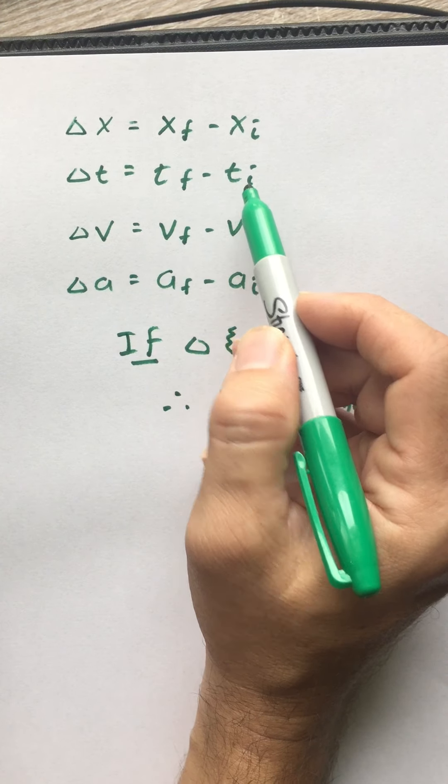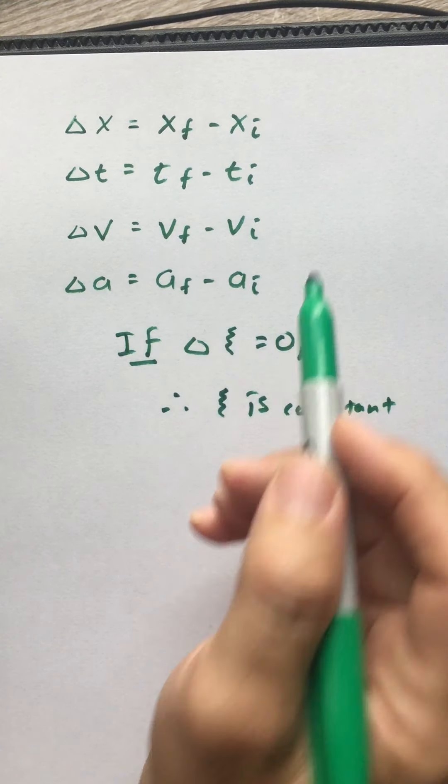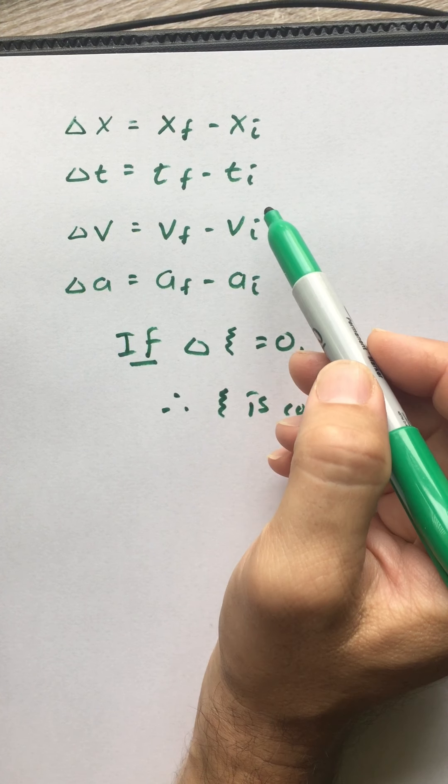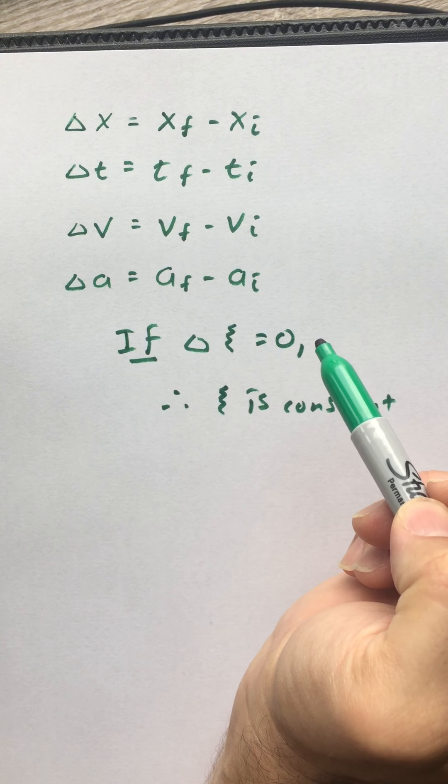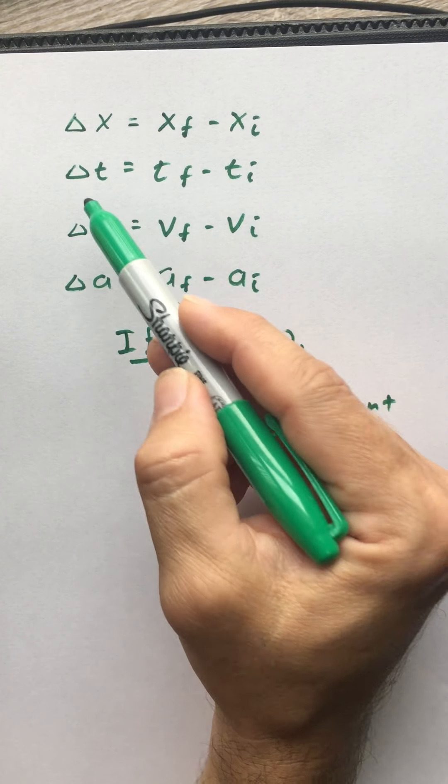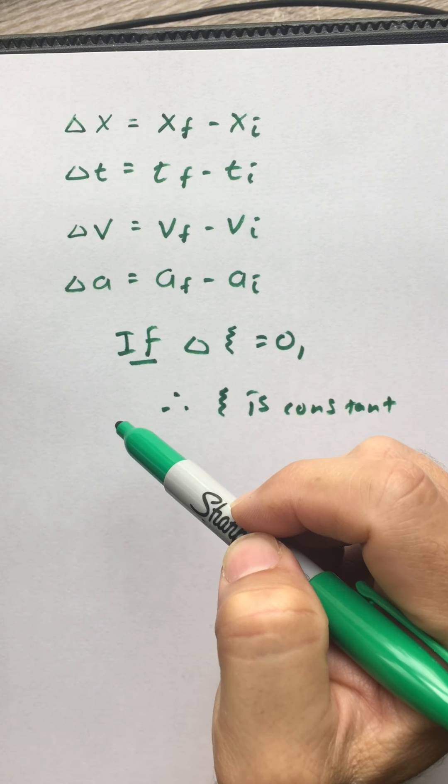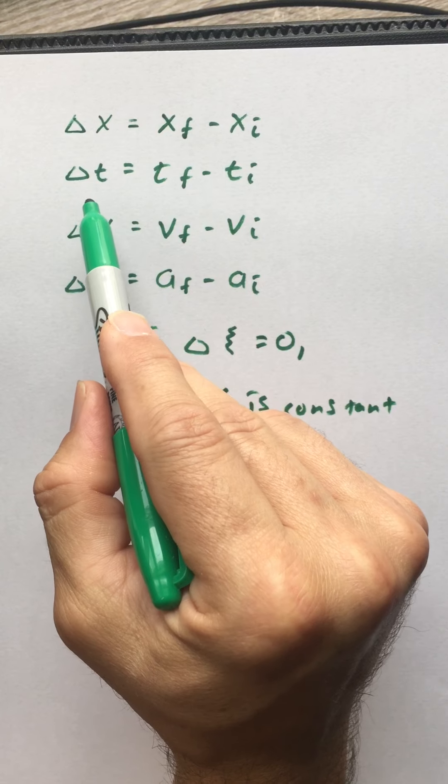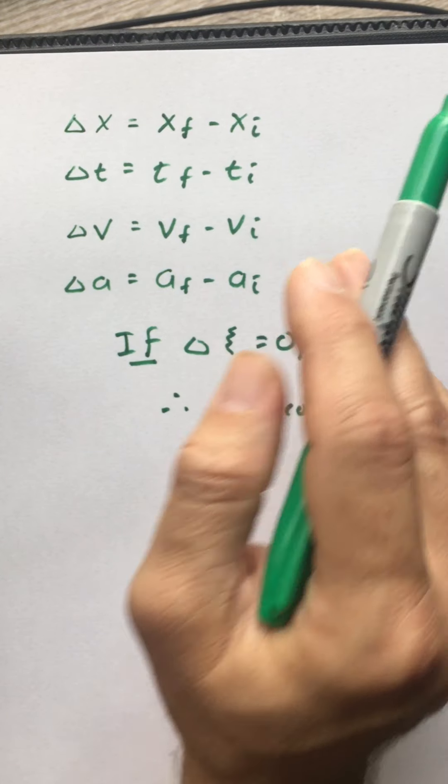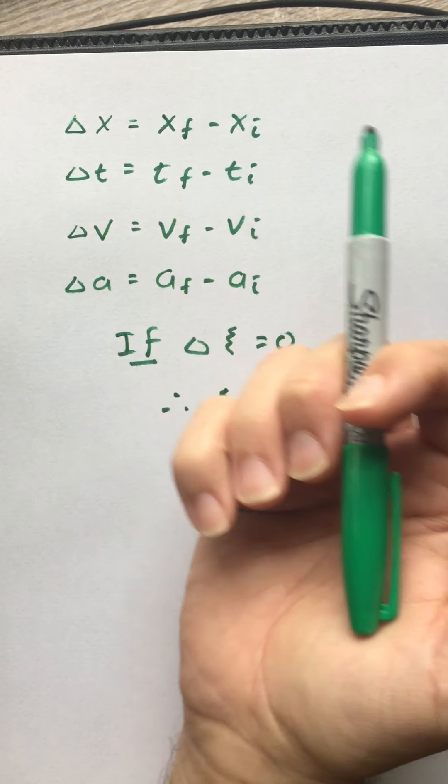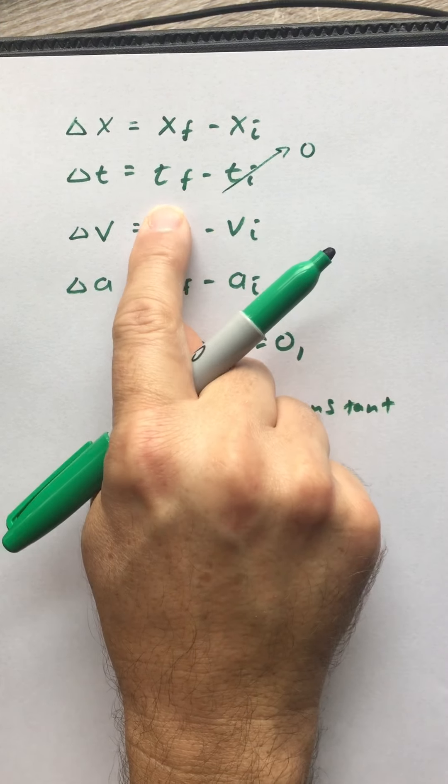There is something we can do with delta T though. We almost always, and this is an arbitrary choice, but we almost always start our stopwatches at zero. That is, we put our temporal origin such that T initial is almost always going to be zero. In fact, we do it so often. We typically don't even write a delta T. We typically just write a T.